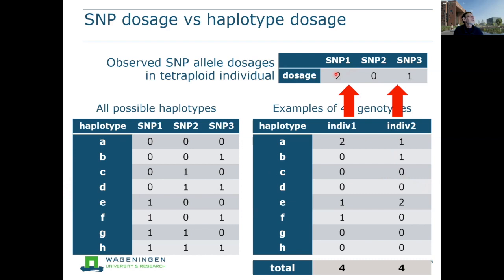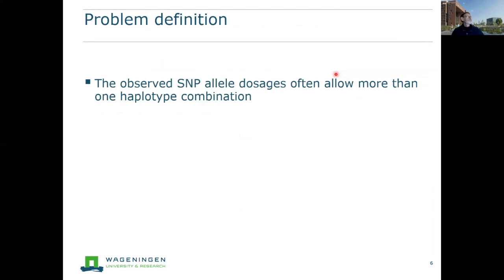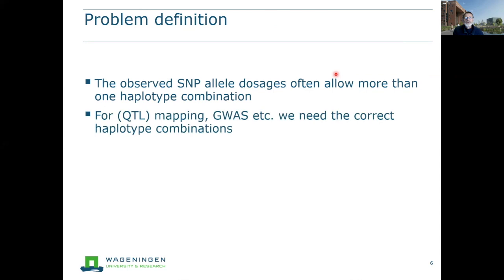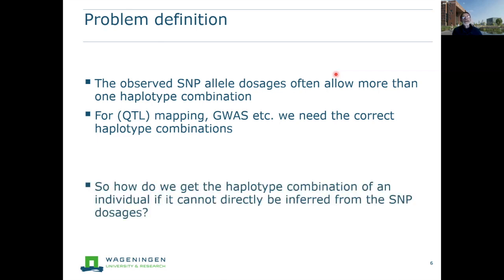The problem is that observed SNP allele dosages often allow more than one haplotype combination. However, for QTL mapping and similar applications, we need the correct haplotype combinations. The problem we want to solve is: how do we get the haplotype combination of an individual, since we cannot directly infer it from the SNP dosages?